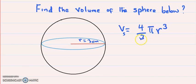That is the general formula for the volume of a sphere. In order to find the volume of this sphere, we substitute r with 3 cm. Therefore, it will be 4/3 multiplied by π multiplied by 3³.